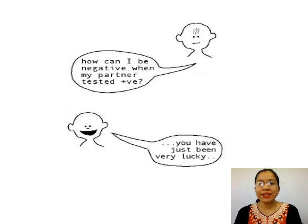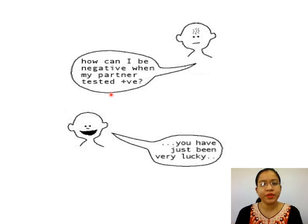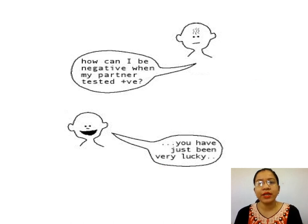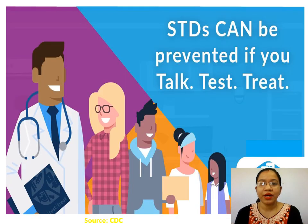In this picture, you can see a conversation between two persons regarding sexually transmitted diseases. The first person is saying, 'How can I be negative when my partner tested positive?' The second person says, 'You have just been very lucky.' It is actually very unlikely that a partner of an STD patient is spared. STDs can be prevented if you talk, test, and treat, and that we will discuss through today's lecture.